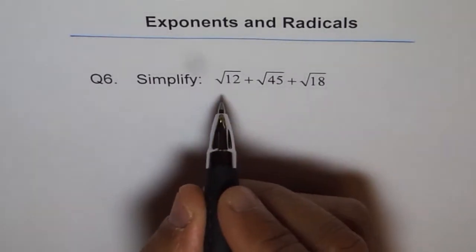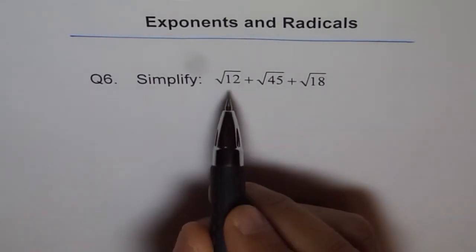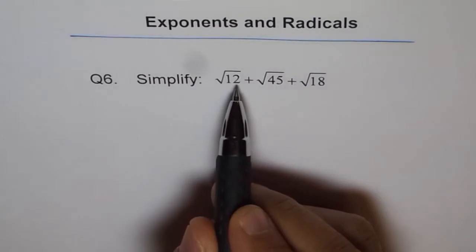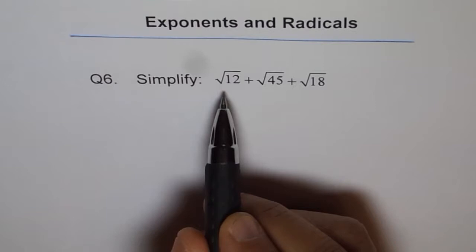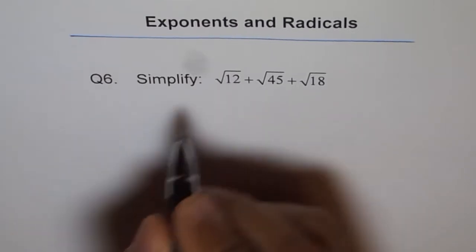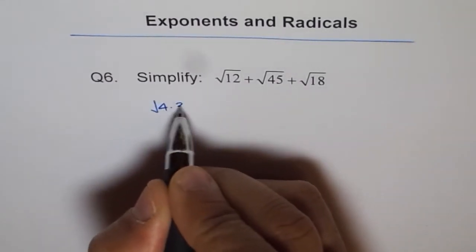Let's write them in a much simpler or factored form. So 12 can be written as 4 times 3. Why are we writing 4 times 3? Because 4 is a perfect square. So we'll write 12 as square root of 4 times 3.